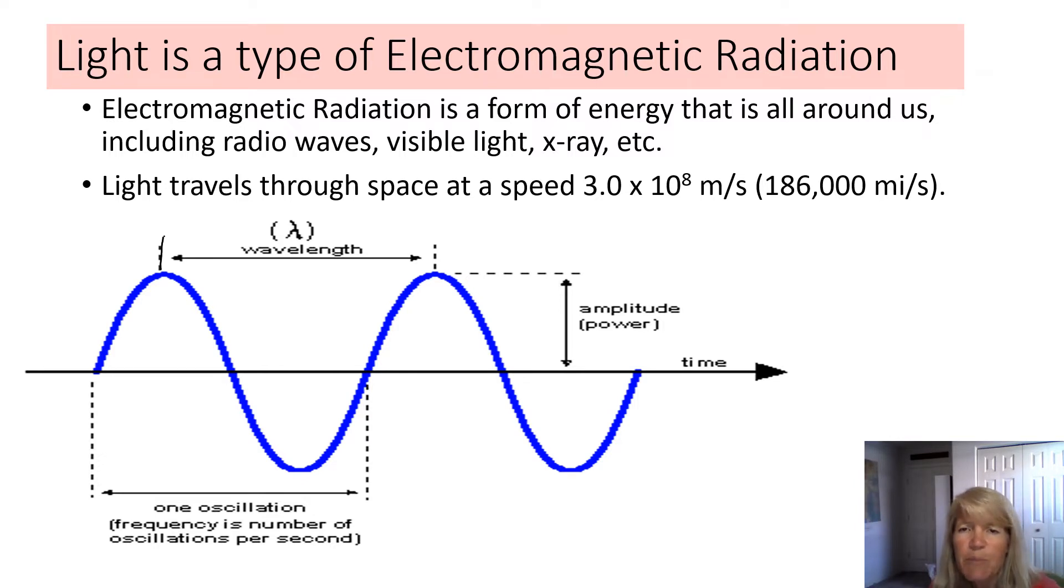Light travels through space at a speed of 3.8 times 10 to the 8 meters per second, which is a very fast speed.